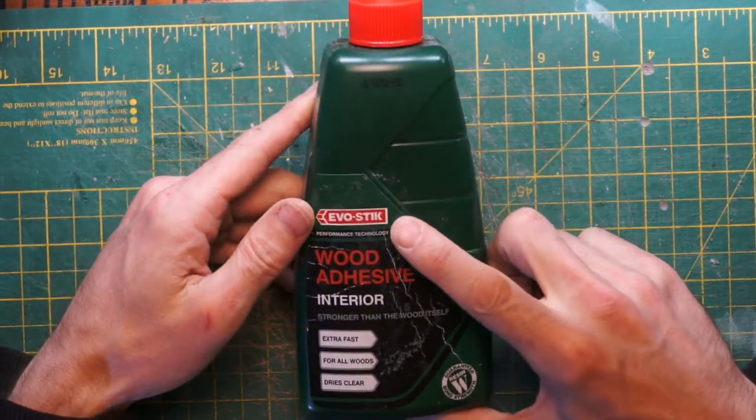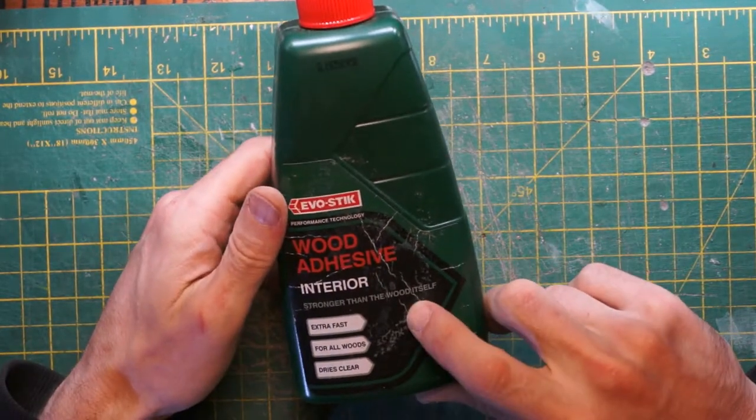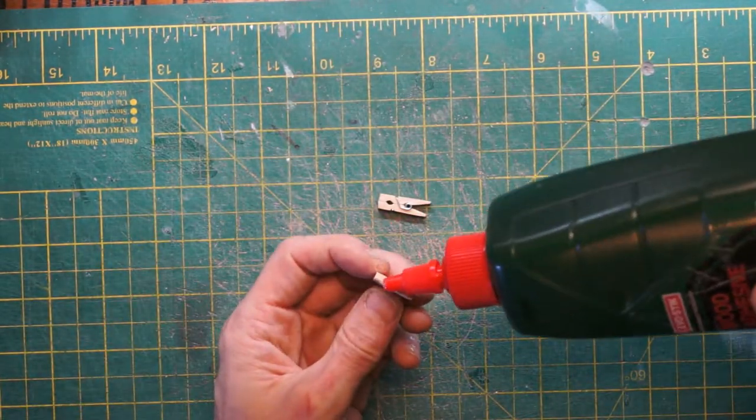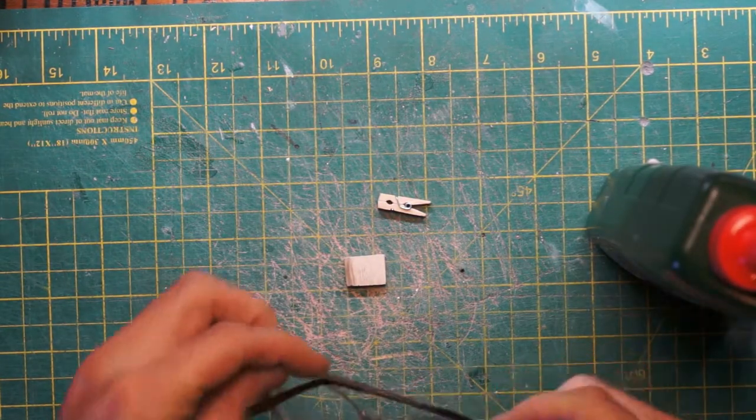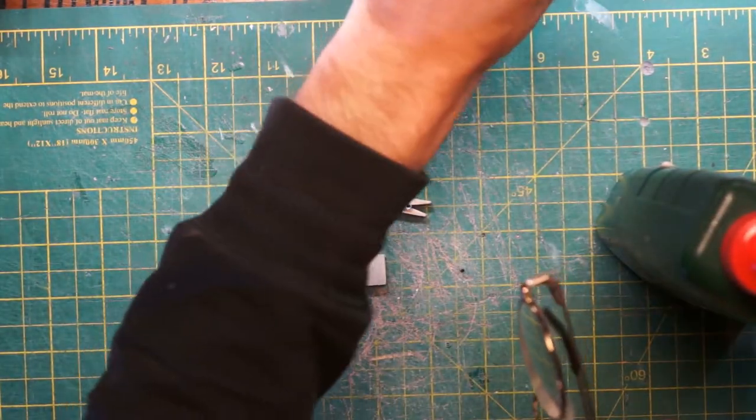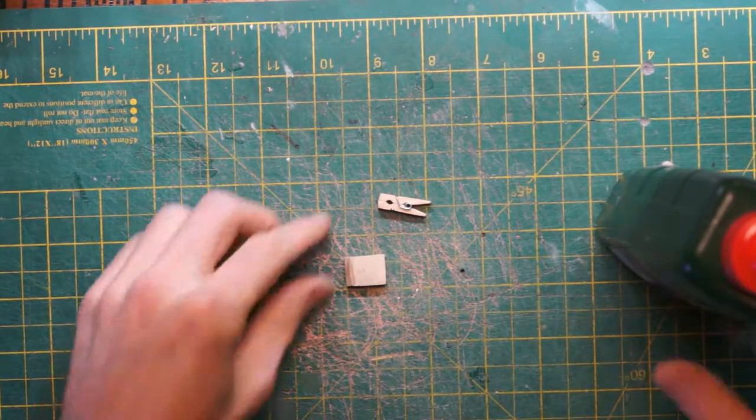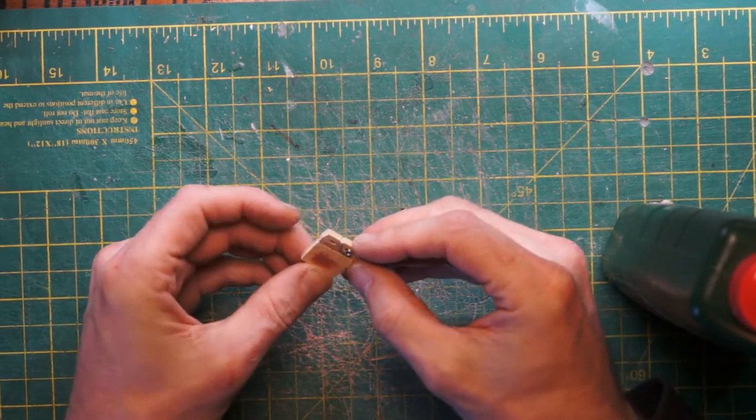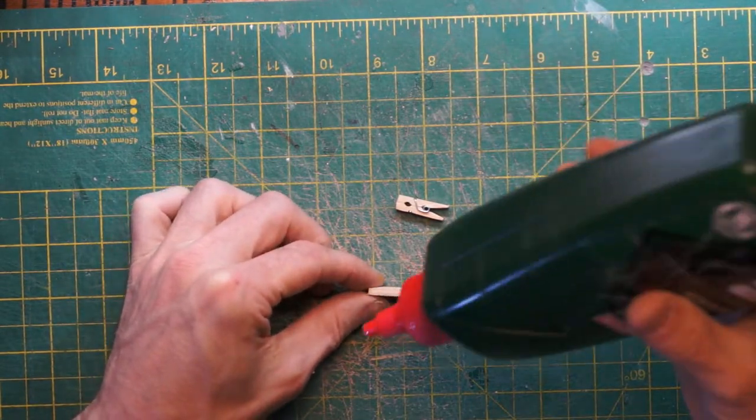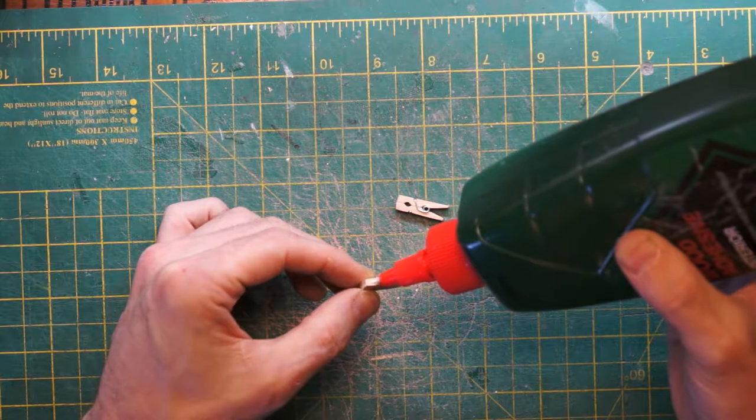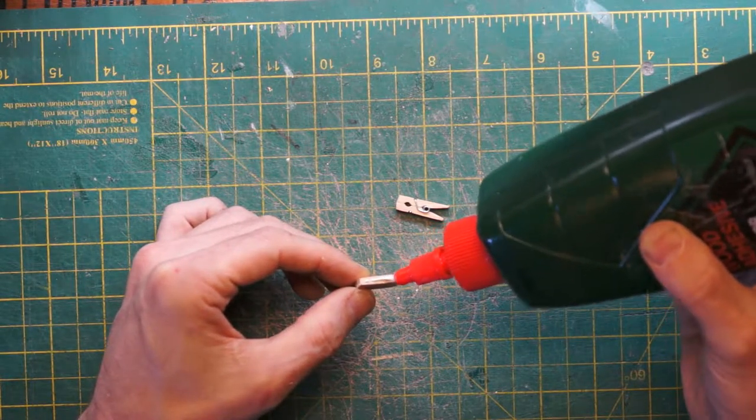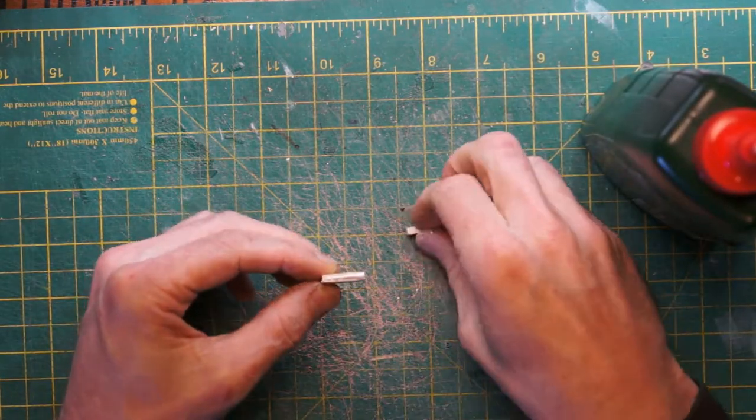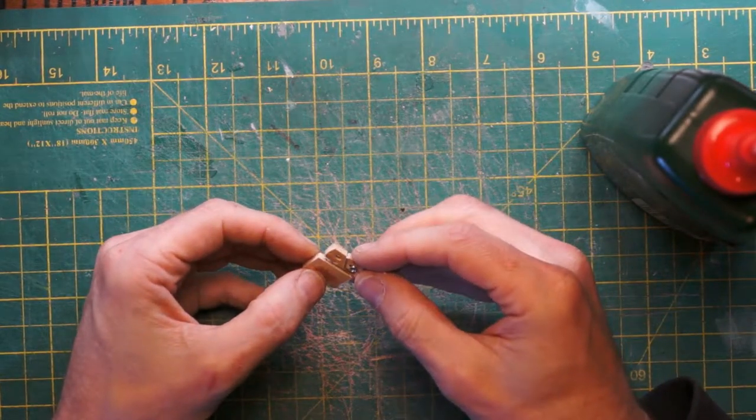Time for some wood glue. This is Evo Stick stronger than the wood itself. I think we need to get out the close-up glasses. That's better. Okay just make sure we're lined up properly. And let's apply a bit of glue. There we go, as small a bead as we can. Okay there's a little bit too much glue on there but nothing that a good sanding can't sort out once it's dry.